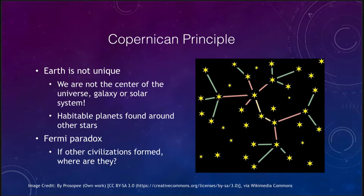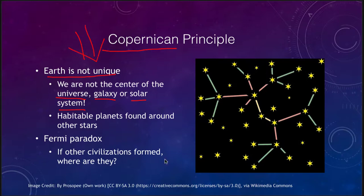One thing we sometimes talk about is what we call the Copernican principle, which means that the Earth is not unique. It goes back to Copernicus, who said we were not the center of the solar system — the sun was at the center instead. We're not the center of the solar system, not the center of the galaxy, not the center of the universe. So the Copernican principle really says the Earth is not unique and that there are lots of habitable planets out there, possibly more Earth-like planets in the universe.